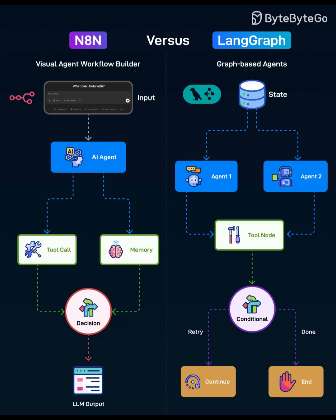This shines for complex tool plans, multi-step reasoning, and error-aware retries. Multi-agent patterns — planner, researcher, coder, reviewer — are well supported. Fine-grained observability over state, tokens, and branch decisions is a key strength.